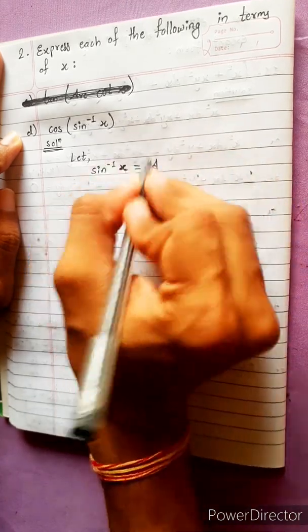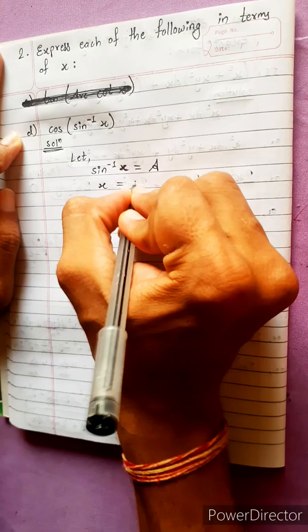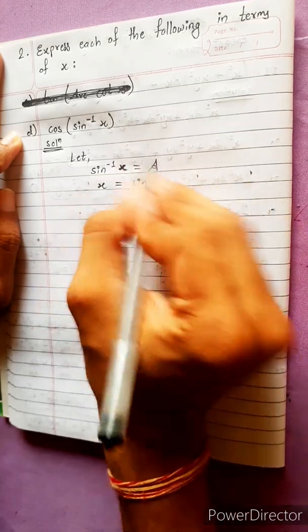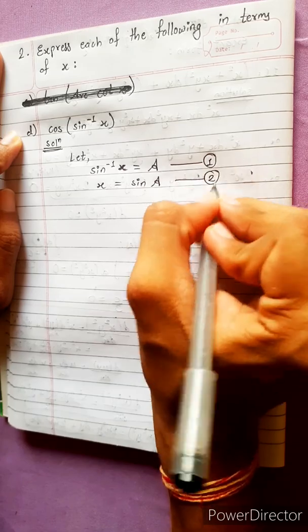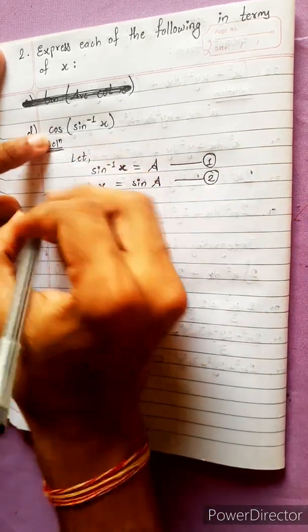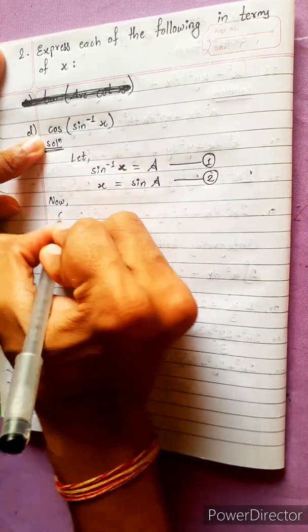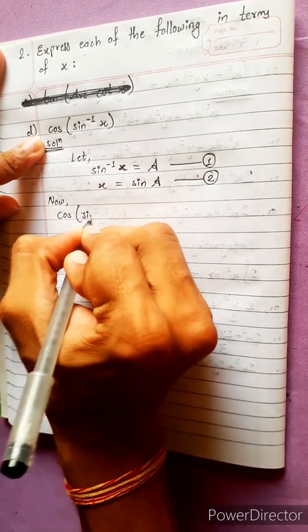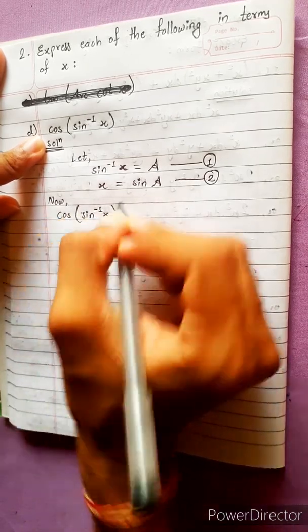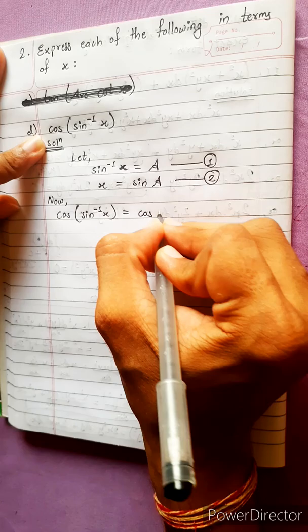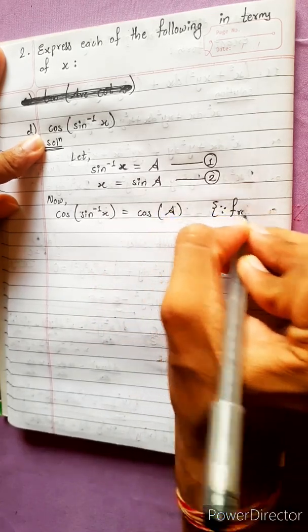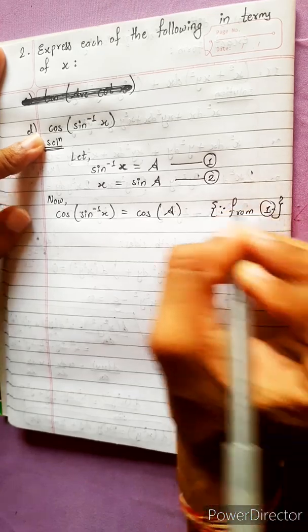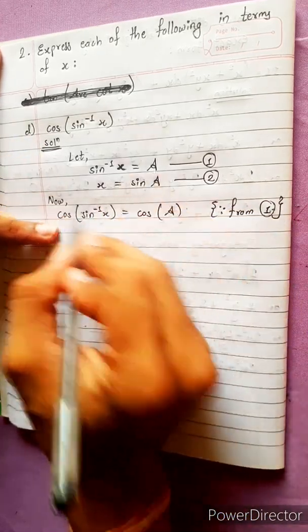Now, sin take this side. x equals to sin A. This equation 1, this equation 2. This equation is important. Now, we have cos angle sin inverse x. This is equals to cos A. How cos A? Look, from 1. Sin inverse x means A, so cos A.